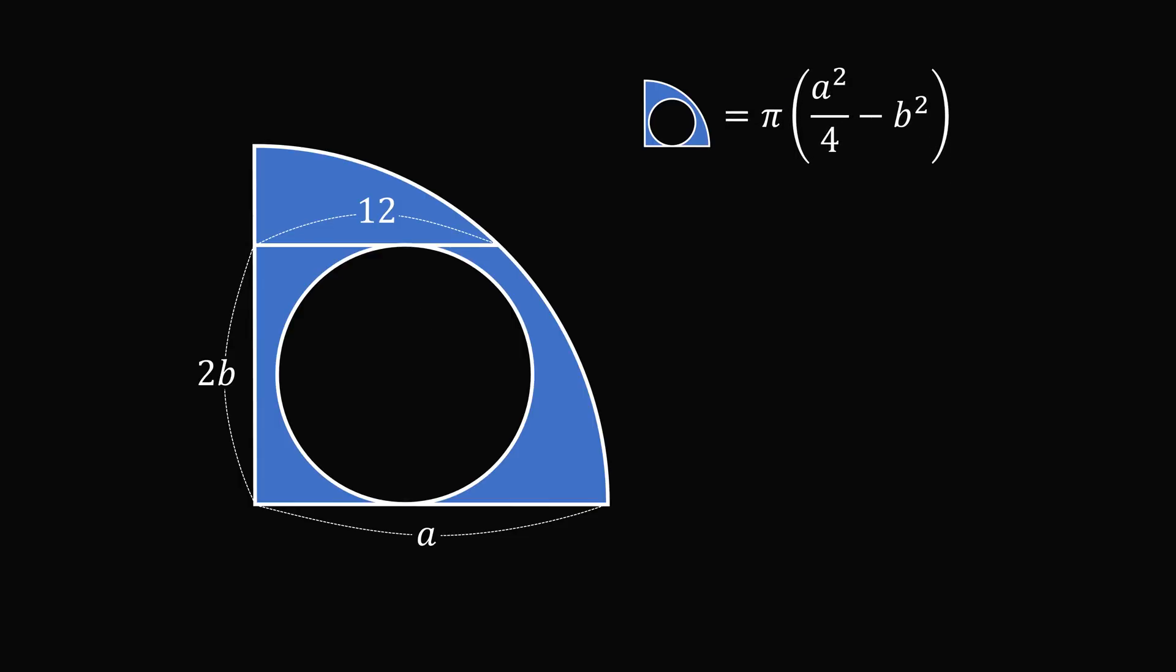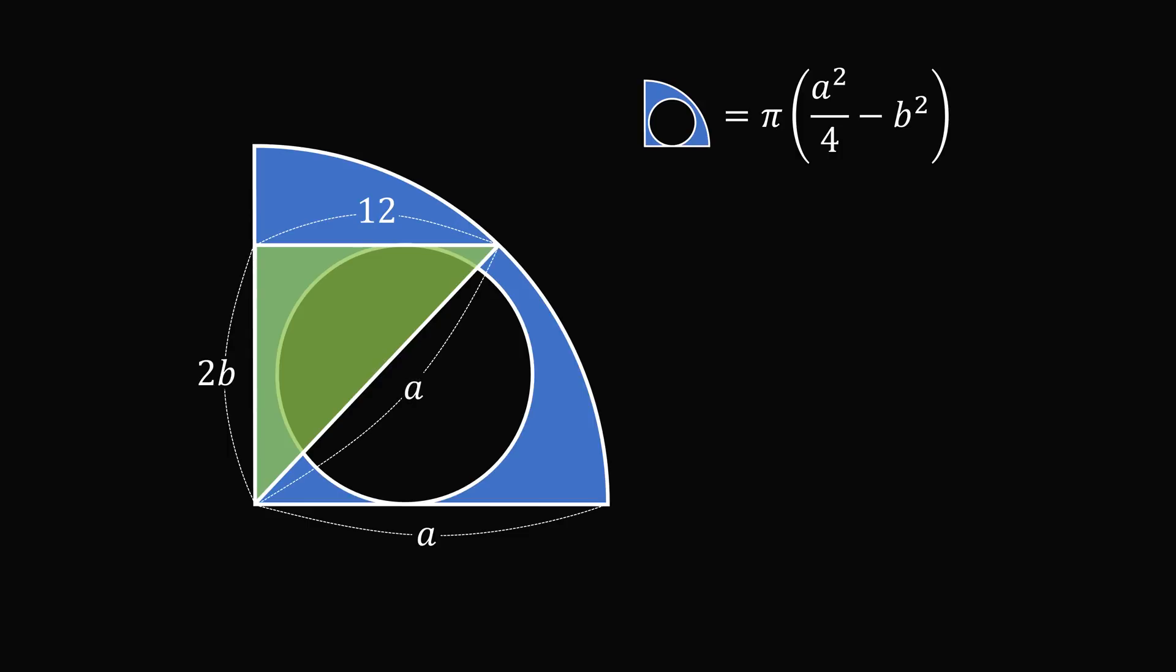It remains to solve for a² over 4 minus b². To do that, construct a radius of the quarter circle to the endpoint of the line segment. This will have a length equal to a. We now have a right triangle where the hypotenuse is equal to a, and its legs are equal to 2b and 12.